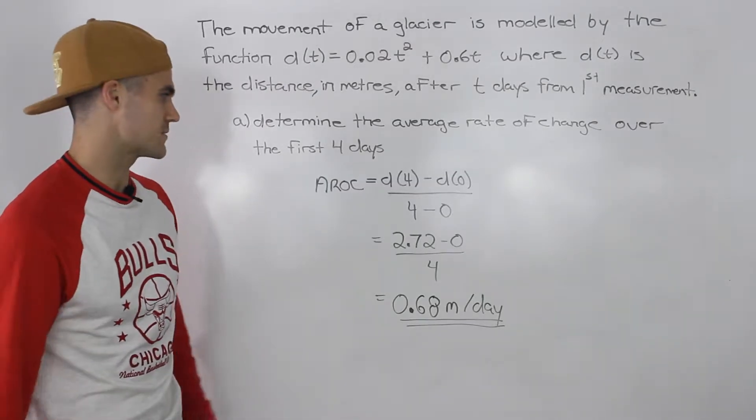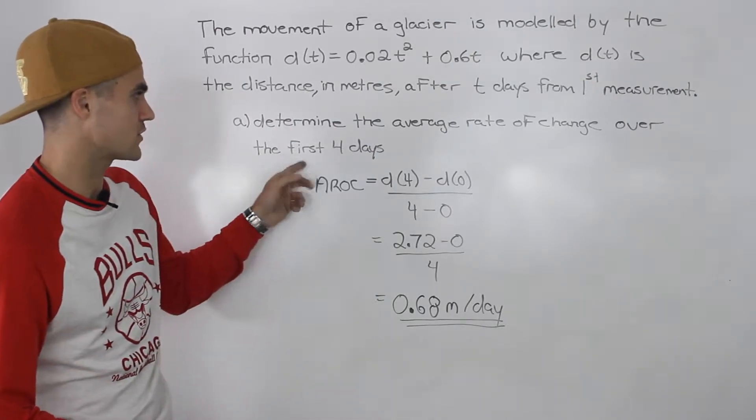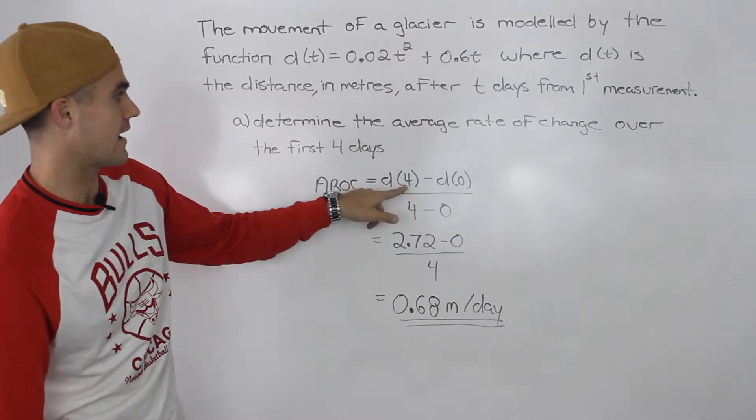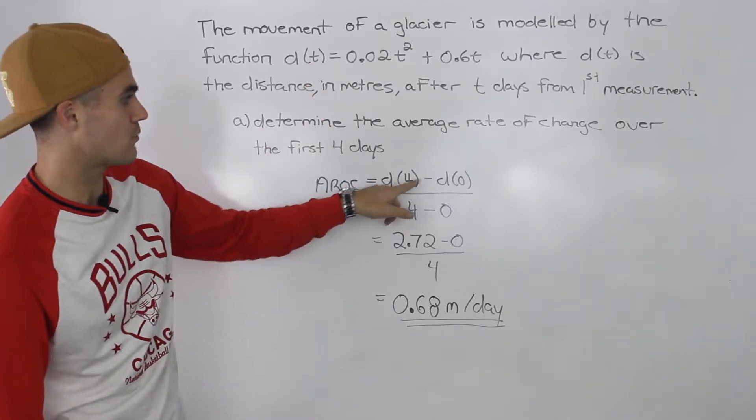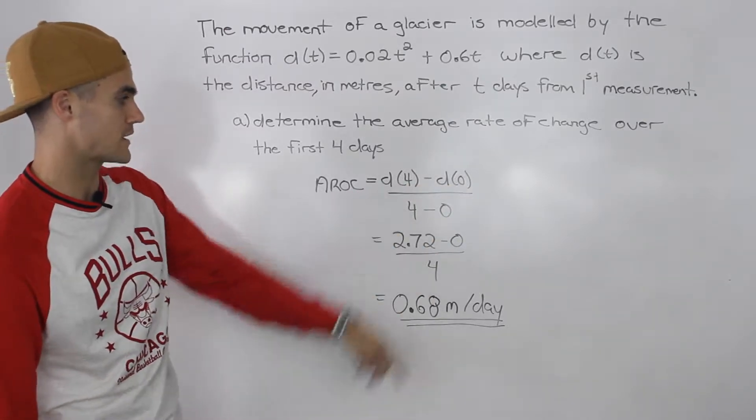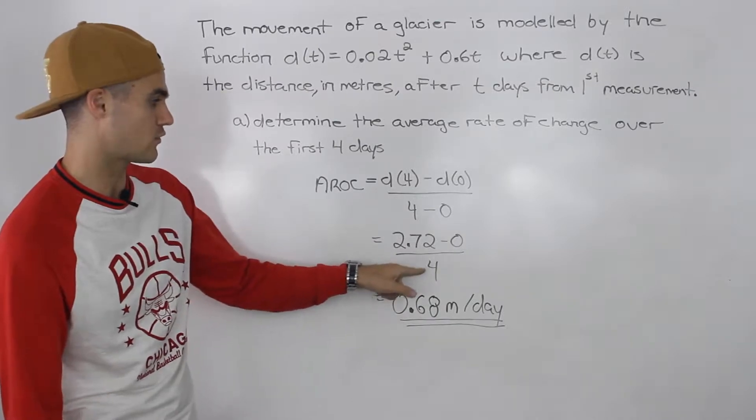Part a is pretty simple, hopefully you're getting these by now. During the first four days, average rate of change would be the value of the function at day four minus the distance at day zero, all over four minus zero. You end up getting 2.72 minus zero over four.